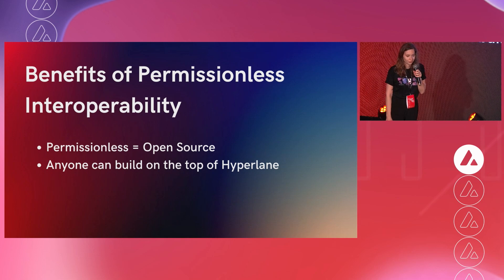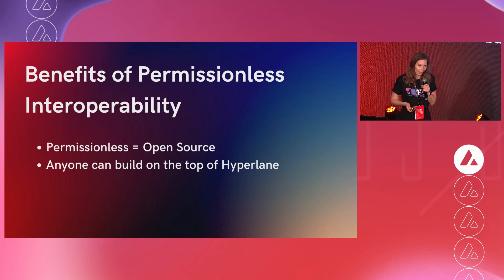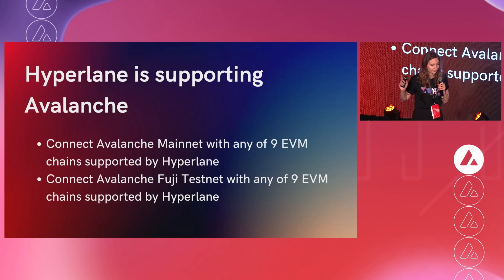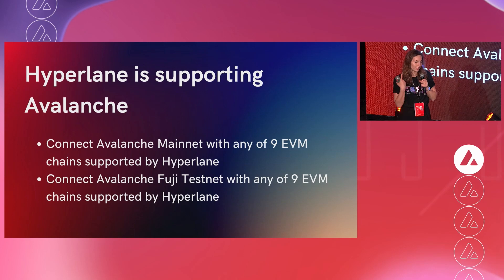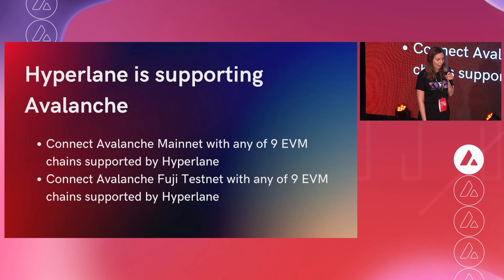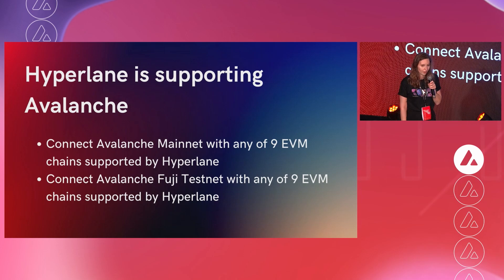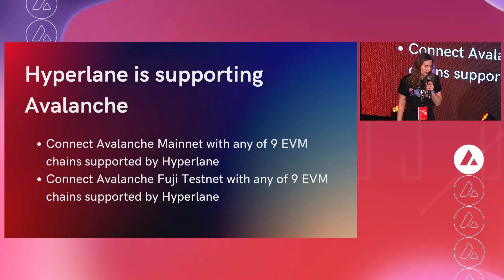Hyperlane is fully open source — we don't hide our code from anybody, so you can just add Hyperlane contracts to your apps. We recently started supporting Avalanche as well, so if you're building on Avalanche, you can simply plug Hyperlane contracts into your app and connect with any of the nine EVM chains. We're also supporting the Fuji testnet, so you can connect with any of the nine supported chains.